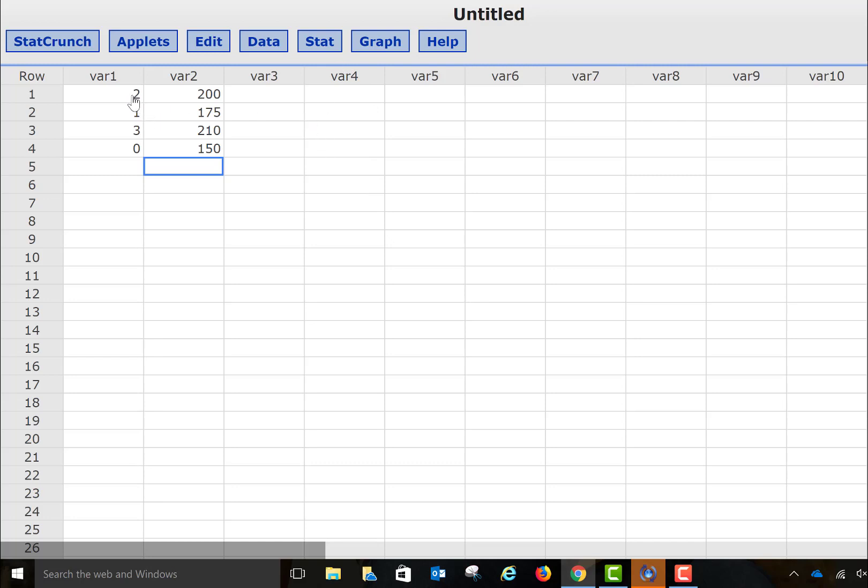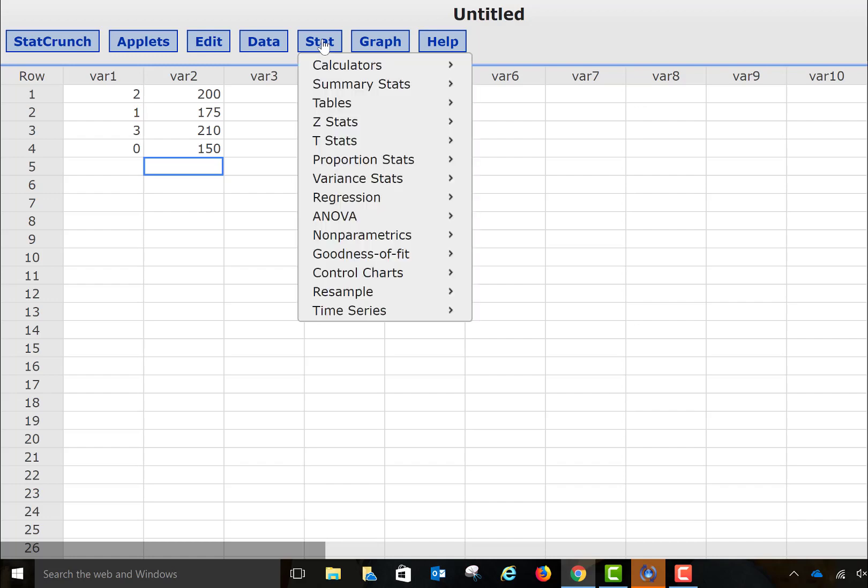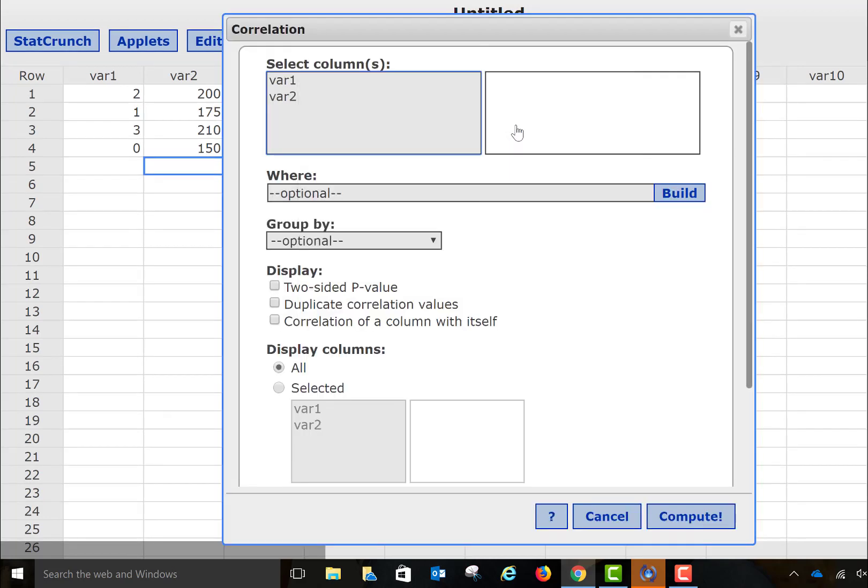So in order to do that, first thing I need to do is make sure my data values are entered, and then I'm going to go to Stat, Summary Stats, and I'm going to select Correlation.